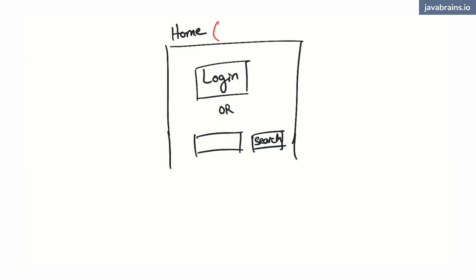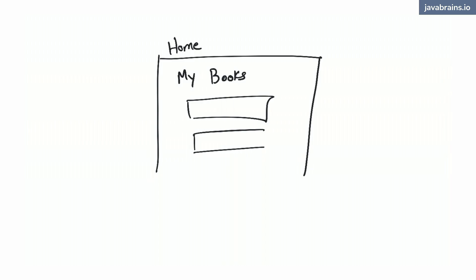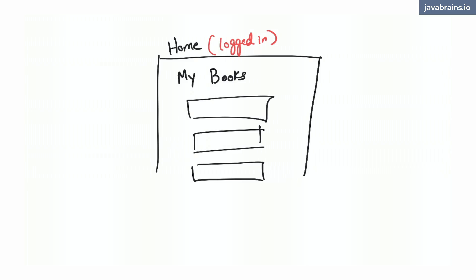There's going to be a homepage for the non-logged-in experience, which will have either a login option or a free-form search. We don't want to restrict usage to only logged-in users, but if somebody wants to mark a book as currently reading or whatever, they have to log in. And for the logged-in homepage, I'm going to create a page called 'My Books,' which contains the last 50 books the user has read.